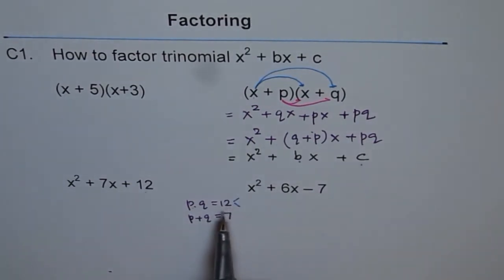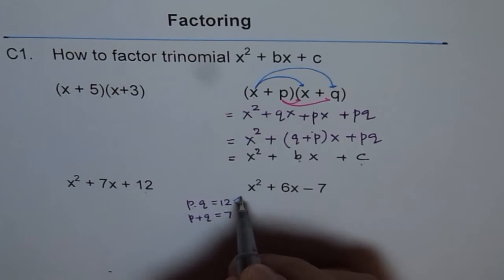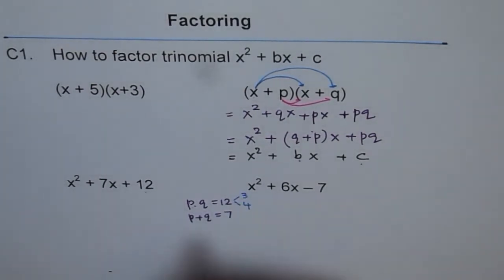Now let us figure out, what are these two numbers? It could be 4 times 3. 1 times 12 does not give me 7. 1 plus 12 is 13. 2 times 6 is 12 but 2 plus 6 is 8. But 3 times 4 is the key number. If I add these two, then I get 7.